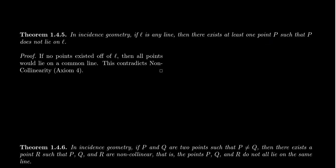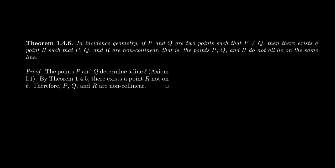As a consequence: in incidence geometry, if P and Q are two distinct points — and we should be specific that they're distinct, since assuming distinctness without stating it can cause logical problems — then there exists a third point R such that the set {P, Q, R} is a non-collinear set. That is, P, Q, and R are not all on the same line.